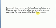Lymph has all the elements of blood except RBC and platelets. Because there is no RBC and no platelets, lymph has no red color — it is colorless.